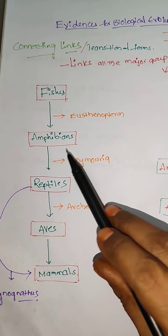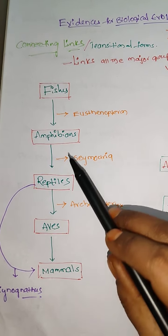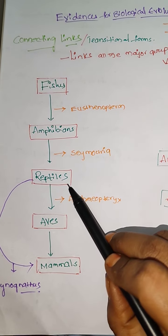Next, Seymourua. It is also connecting link between the amphibia and also reptiles. It has a character of amphibians and reptiles.